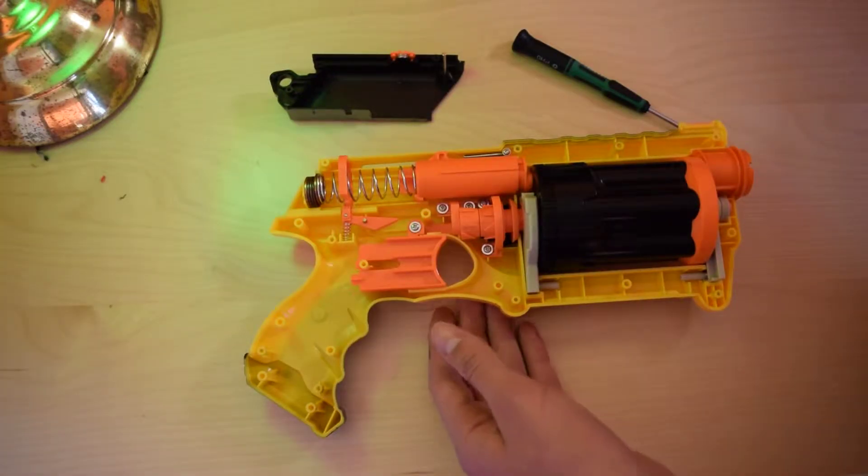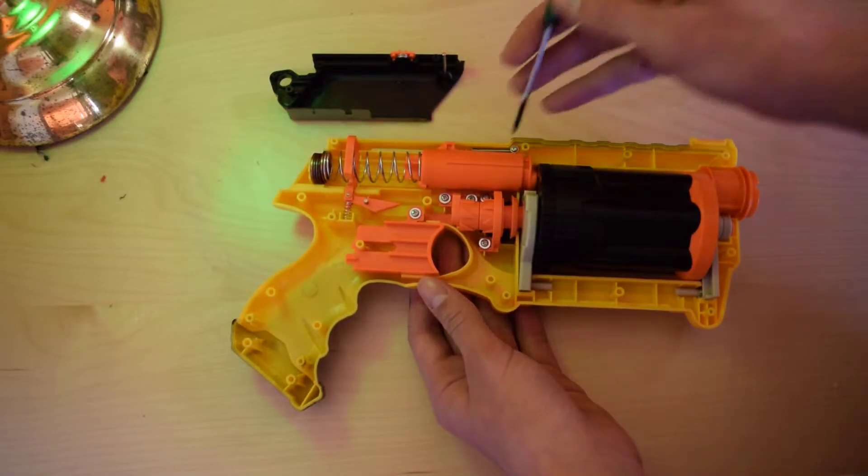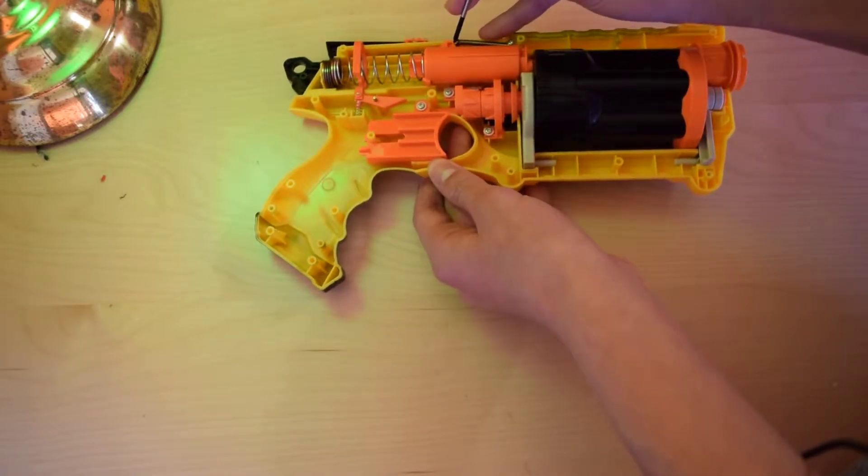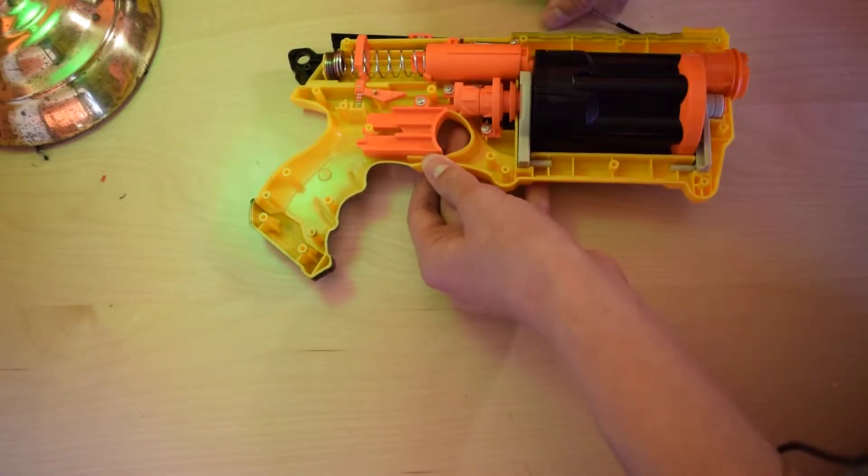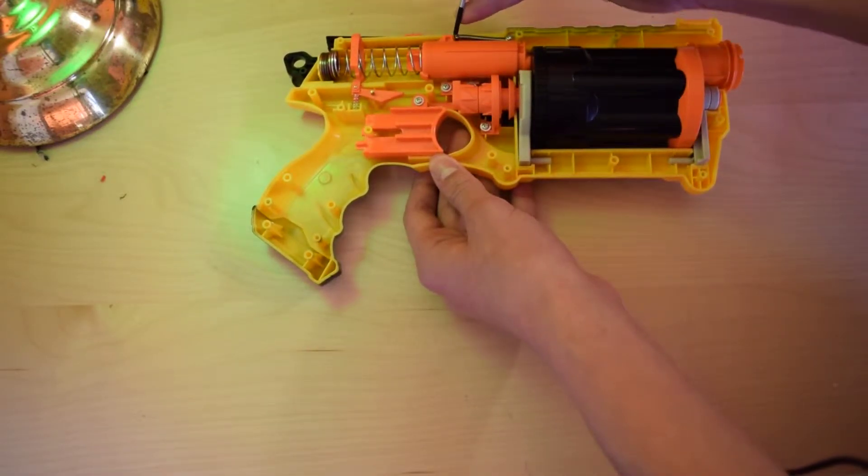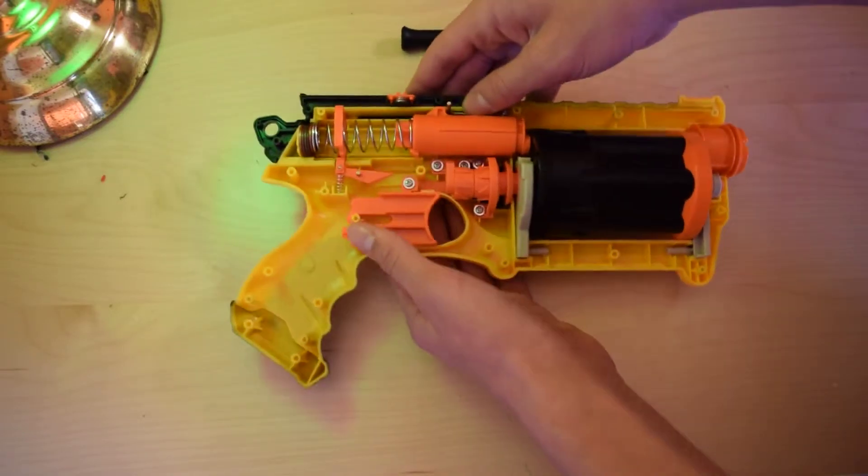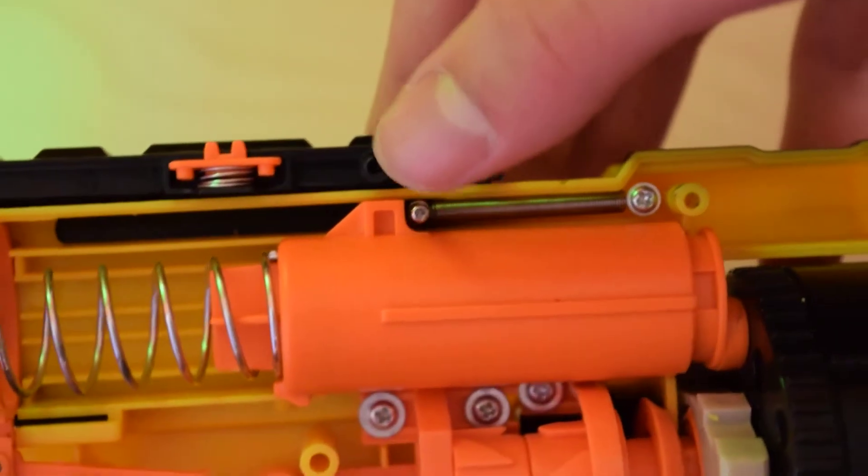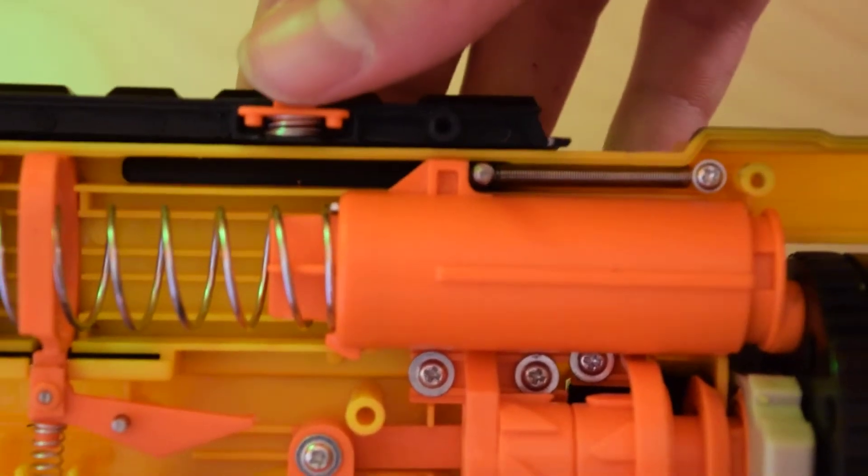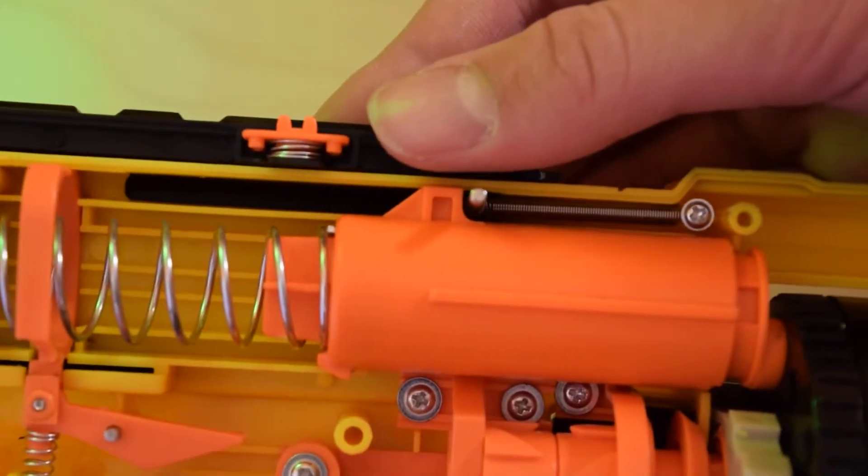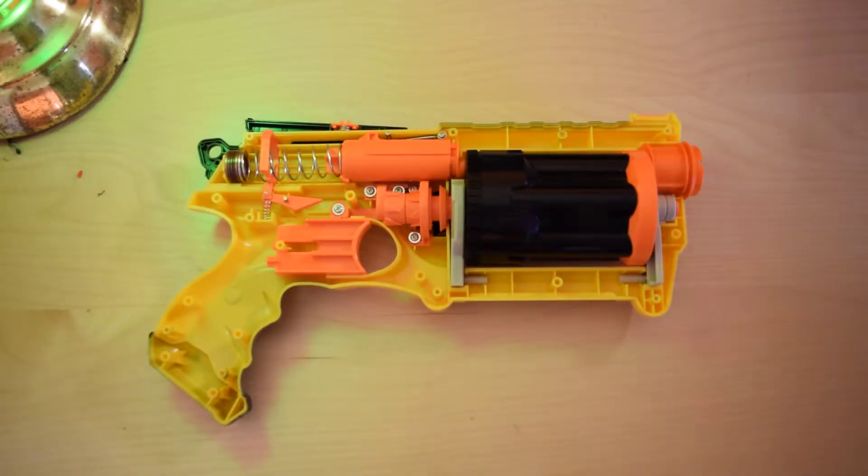Once you've got the pennies back in you can put the whole blaster back together. This came out so I'll need to put that back. Also when you're putting it back together make sure that the pin on the slide is in front of this on the plunger. Otherwise pulling the slide back will do nothing, it has to be there so that it'll actually move the plunger. Now we just need to put the shell back together, the screw holes should line up so it should be pretty straightforward and then you're done.